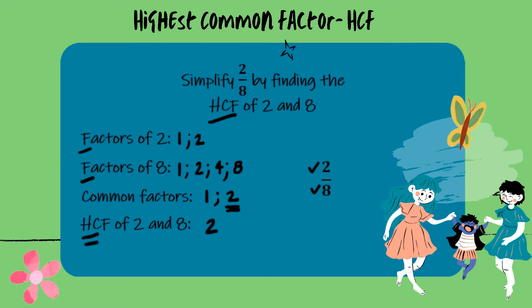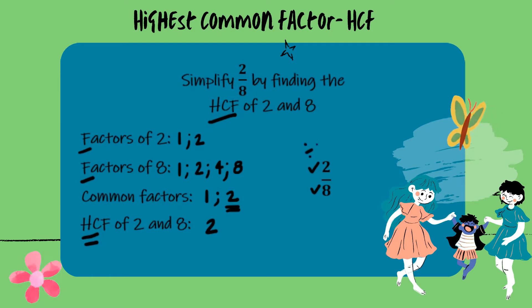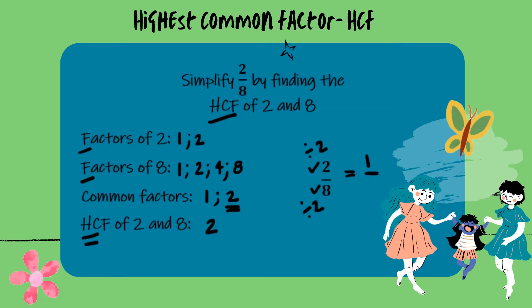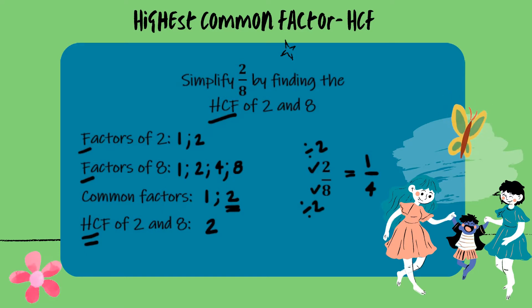We now return to our fraction. We divide both the numerator and the denominator by the highest common factor. 2 divided by 2 is 1 and 8 divided by 2 is 4. So our fraction 2 over 8 is simplified to 1 over 4.